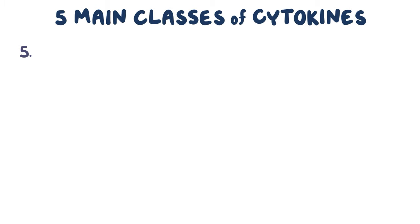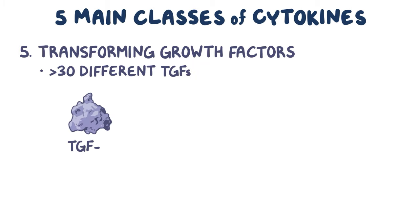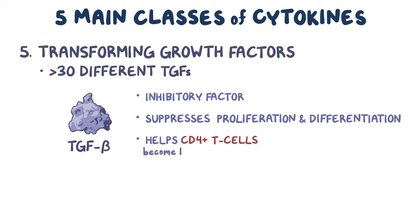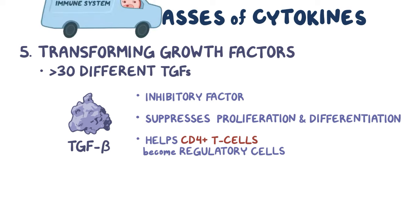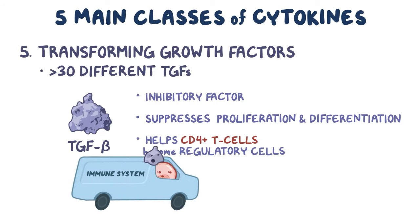The fifth and final group includes the transforming growth factors. There are more than 30 different TGFs, and the most important in the immune system is TGF-beta. TGF-beta is an inhibitory factor that suppresses proliferation and differentiation of various cells. It also helps CD4-positive T cells to develop into a regulatory cell that can slow down or stop the overall immune response. You can think of transforming growth factor beta as helping to put on the brakes.